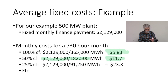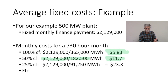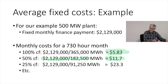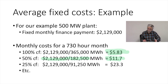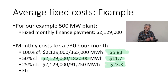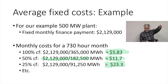If we further reduce the capacity factor to 25%, we're only going to generate a little over 91,000 megawatt hours. We still have our $2,129,000 fixed payment, but now we're only dividing it by 91,000 megawatt hours, and the average fixed cost goes up to $23.30. The lower the capacity factor, the faster the average fixed cost is going to go up.